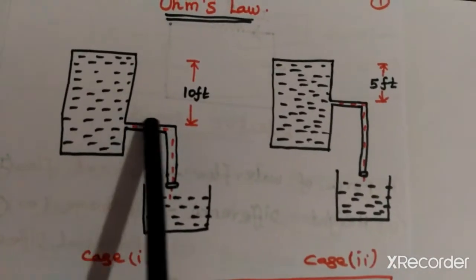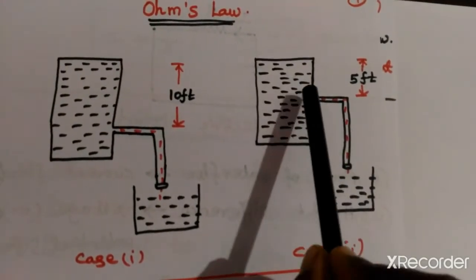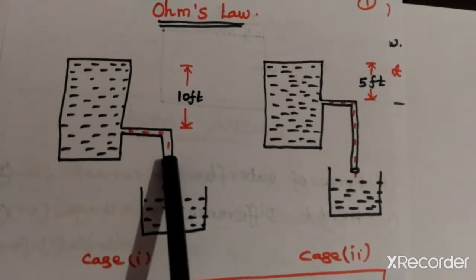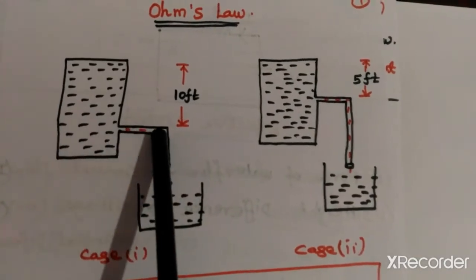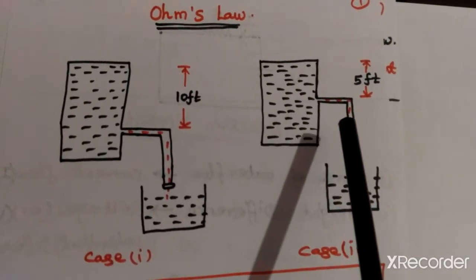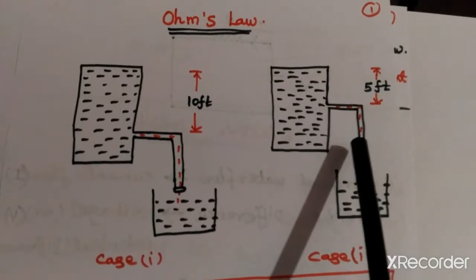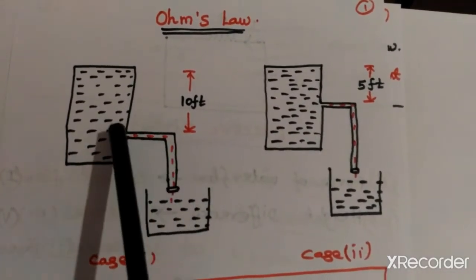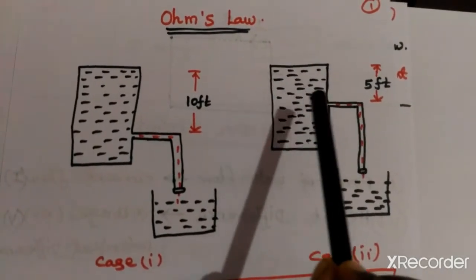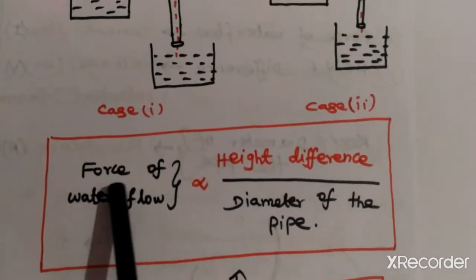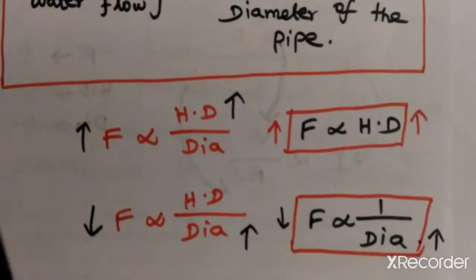Now consider the diameter of the pipe. The diameter of this pipe is somewhat less than the pipe in case one. If the diameter is very high, the force of water flowing through the pipe is decreased. If the diameter is decreased, the force of the water flowing through the pipe is increased. So the force of water flow is inversely proportional to the diameter of the pipe.